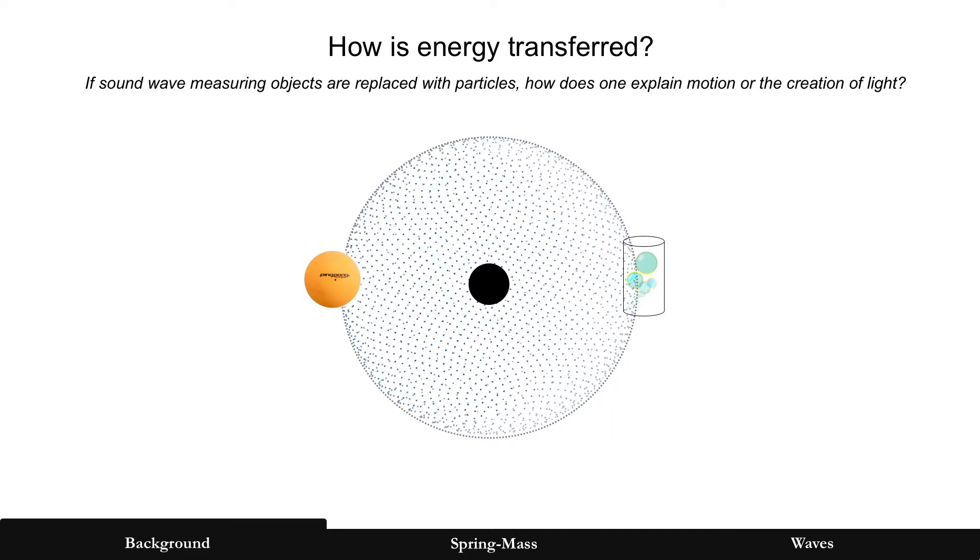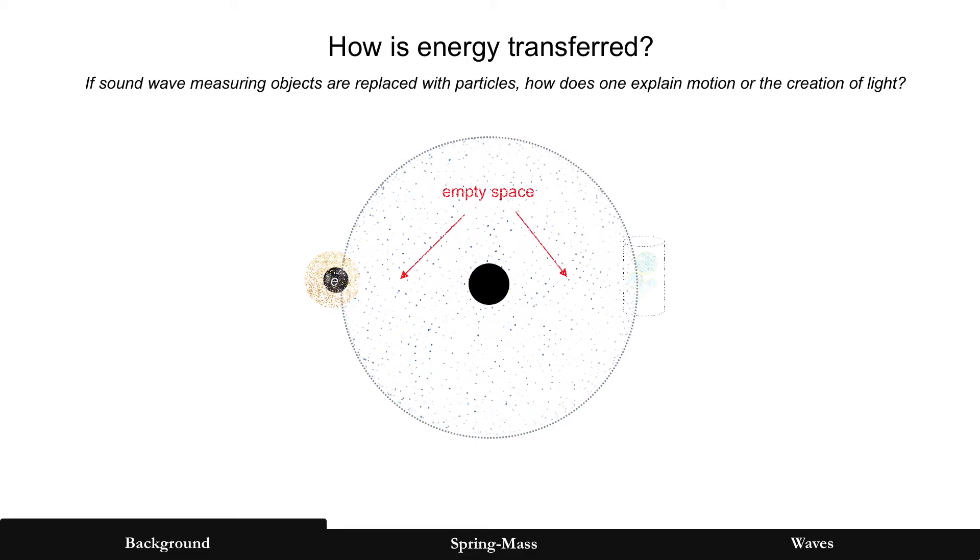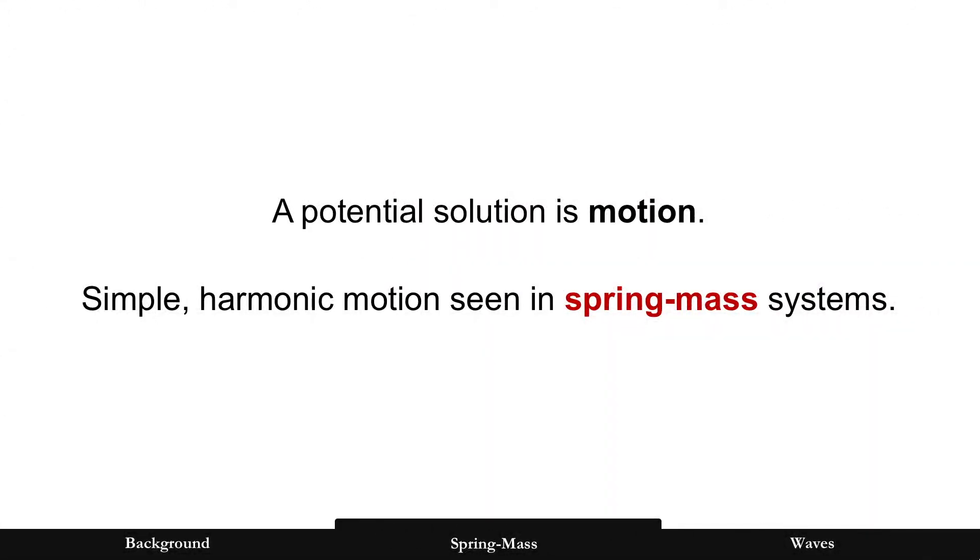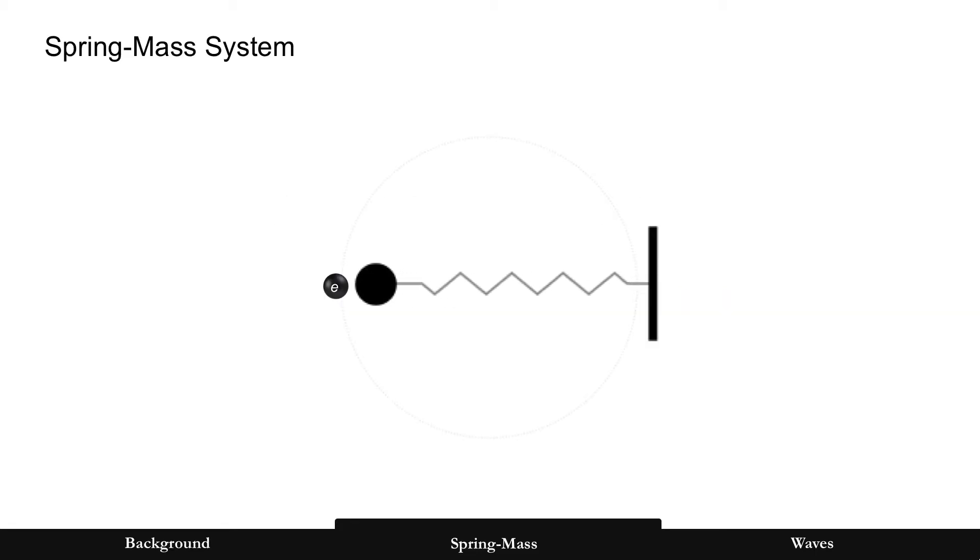But how is energy transferred? If sound wave measuring those objects, such as a ping pong ball or those gas bubbles, are replaced with particles, how does one explain motion or the creation of light? So let's replace that ping pong ball with something like electron. There's empty space, so how does it move? That's the Coulomb force. Or how is that photon generated for light? So a potential solution is motion, but a very specific type of motion called simple harmonic motion, which is also seen in spring mass systems. So let's assume that something physically moves and pushes it.